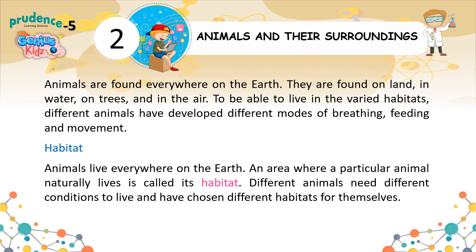Animals are found everywhere on the earth. They are found on land, in water, on trees, and in the air. To be able to live in the varied habitats, different animals have developed different modes of breathing, feeding, and movement.